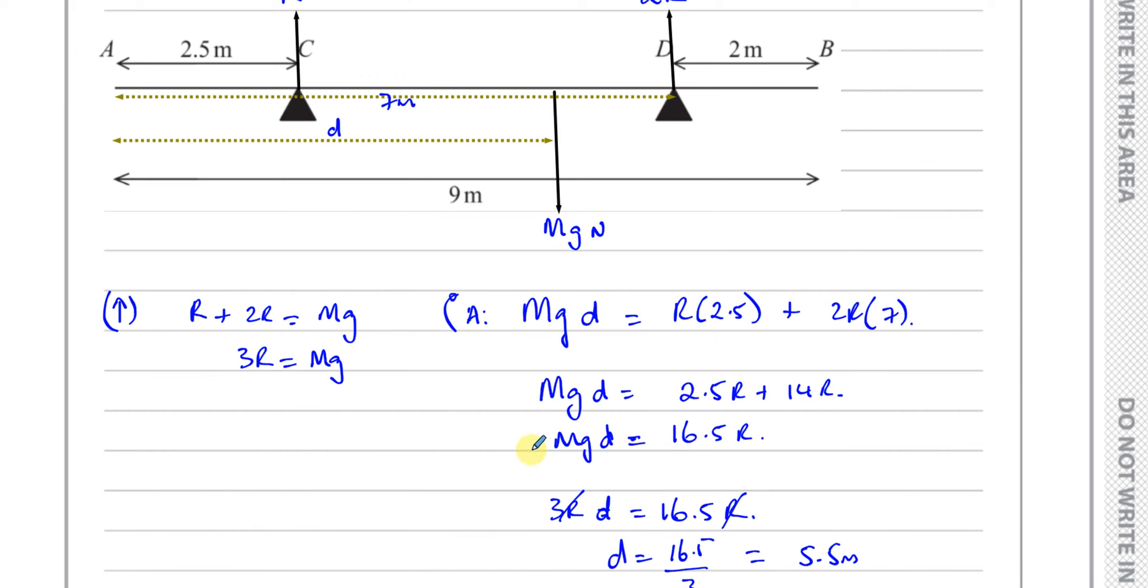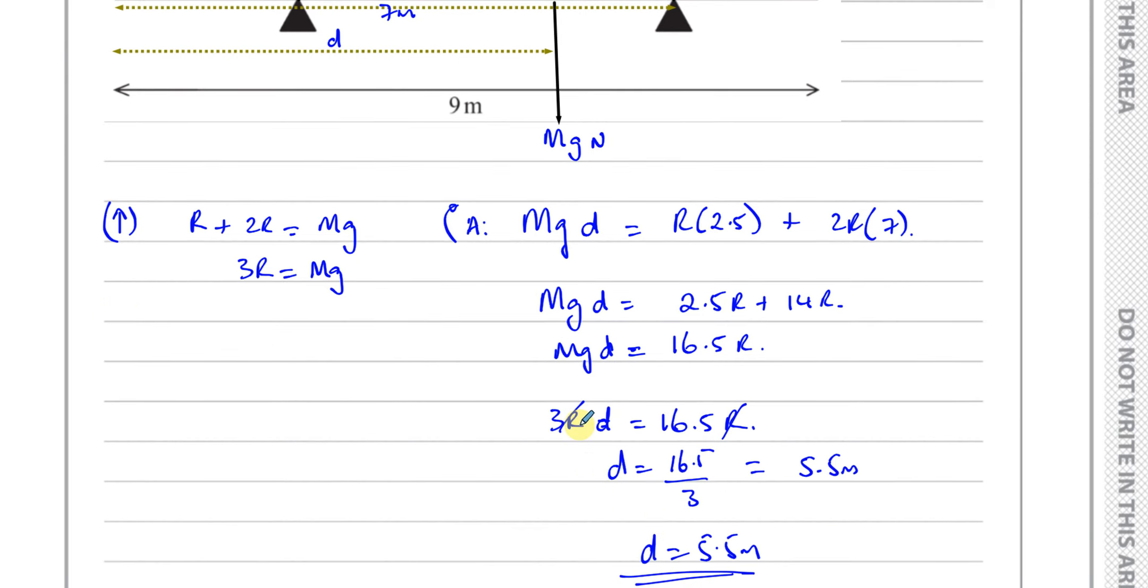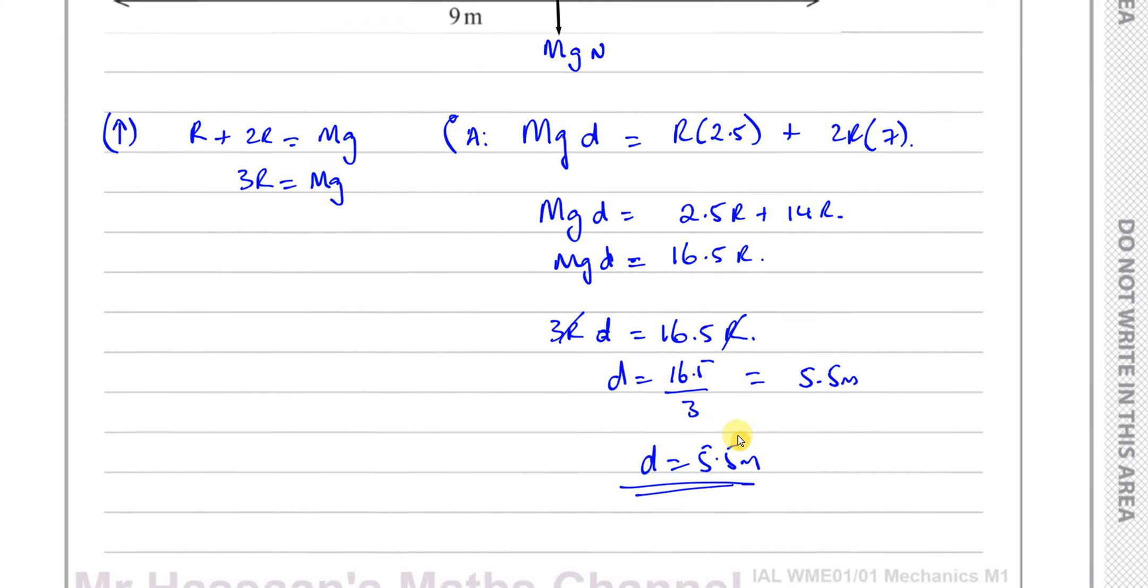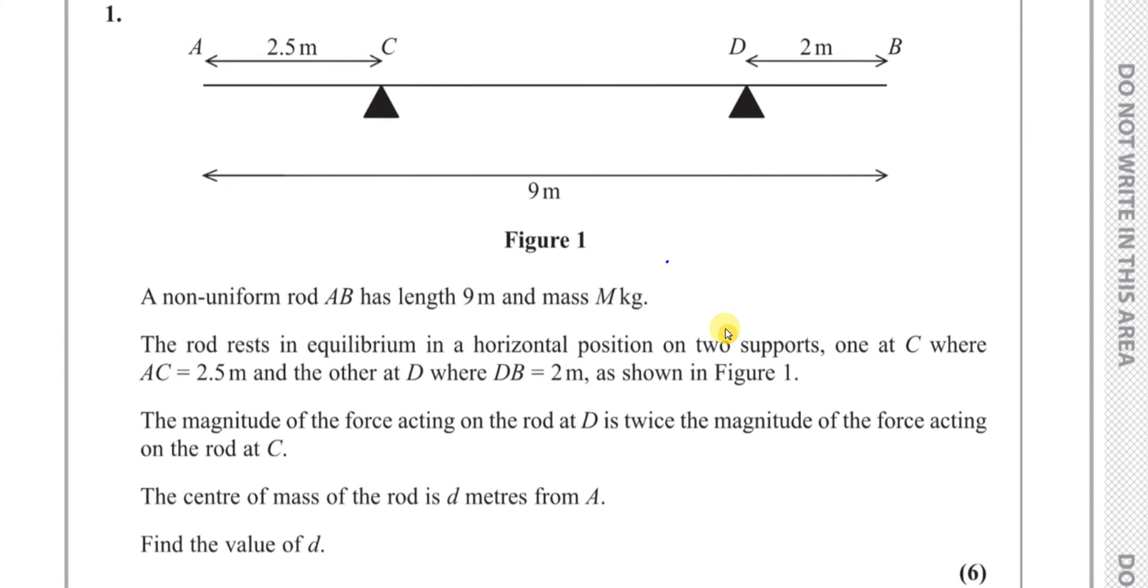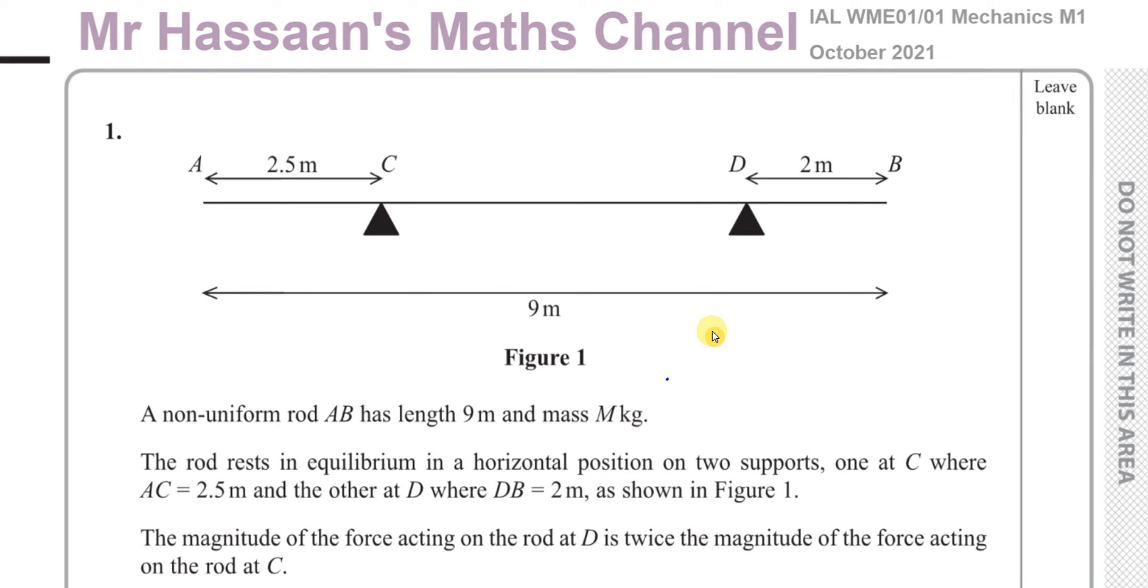And we have something now with Mg unknown and R unknown. But because we can express the mass in terms of R, Mg equals 3R, we can then replace the Mg with 3R. And then you see the R's cancel out, leaving us with just something in terms of D. So we've solved the problem. It's pretty simple.